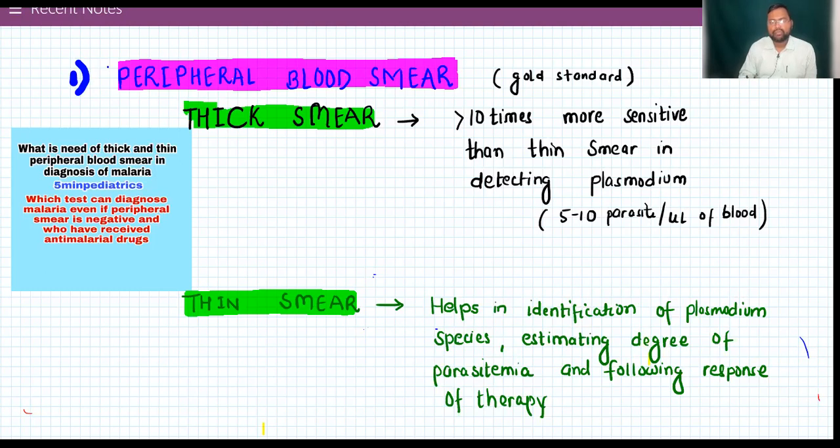We have two ways by which we can diagnose malaria. First, we have peripheral blood smear, which is considered to be the gold standard. We have to prepare two smears, one thick and one thin.